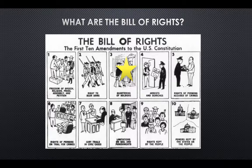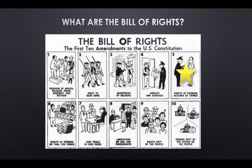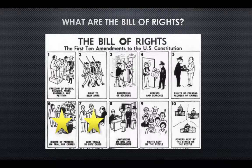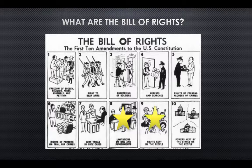The third amendment is quartering of soldiers. The fourth amendment is for the right of arrests and searches. The fifth amendment is the rights of persons accused of crimes. The sixth amendment is the rights of persons on trial for crime. The seventh amendment is the right to have jury trials in civil cases. The eighth amendment gives limitations on bail and punishments. The ninth amendment covers rights kept by the people. And the tenth amendment covers the powers kept by the states or the people.